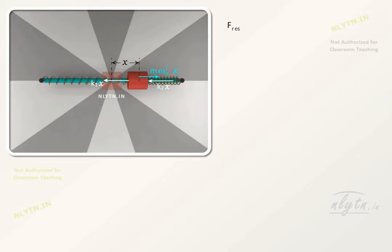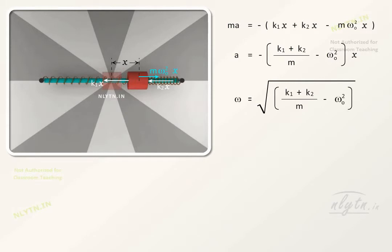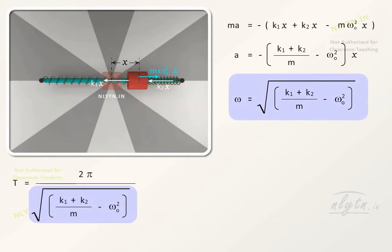Therefore, the net restoring force will be equal to this term. Writing net force equal to mass into acceleration, we can say that omega will be equal to this term, and time period of oscillation will be equal to 2 pi by omega.